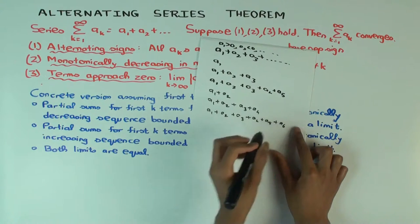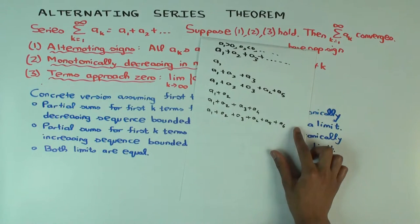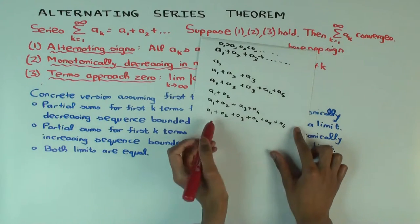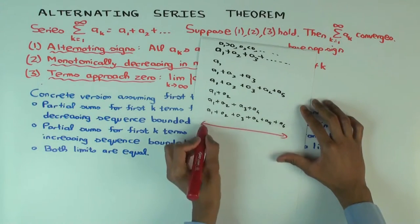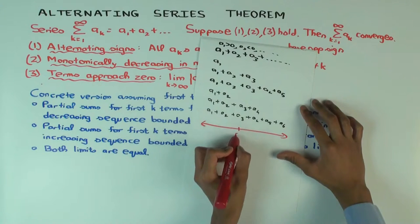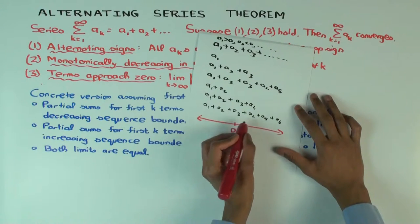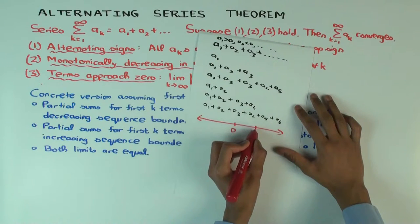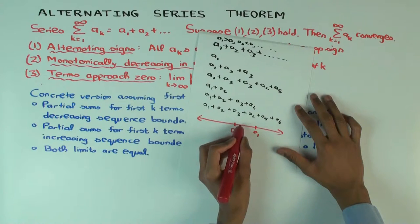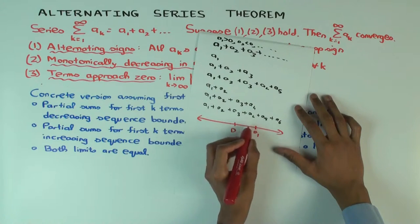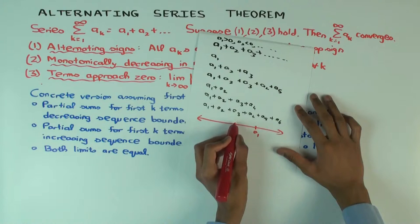We start with the number line. Remember: the infinite sum is the limit of the partial sums. Pictorially, to compute a partial sum I start at 0, move by a_1, then move by a_2 to get to a_1 plus a_2, then move by a_3 to get to a_1 plus a_2 plus a_3, and so on.